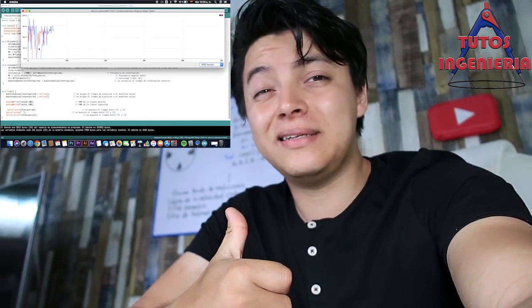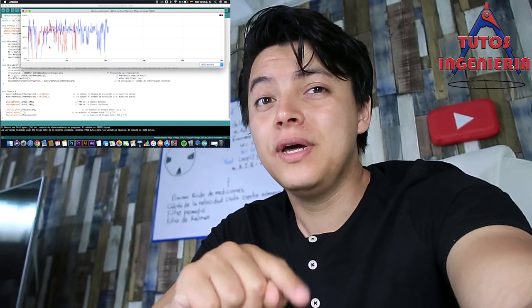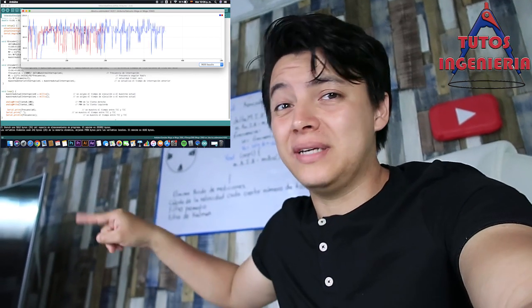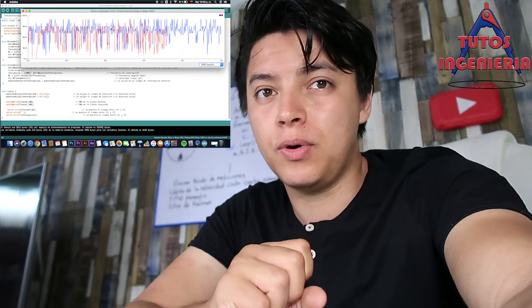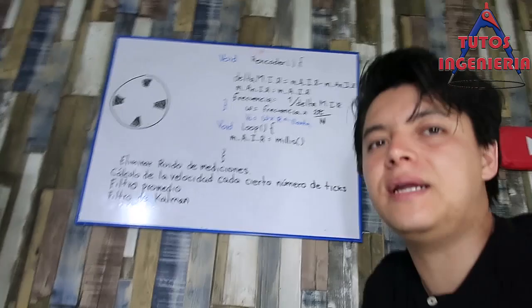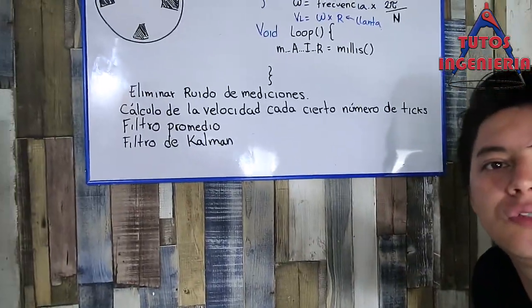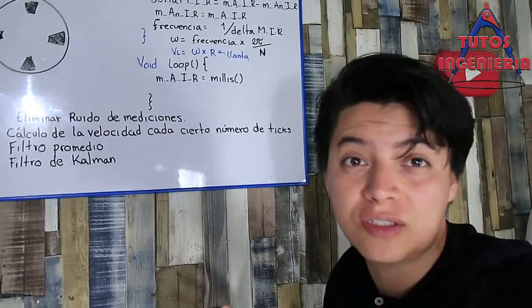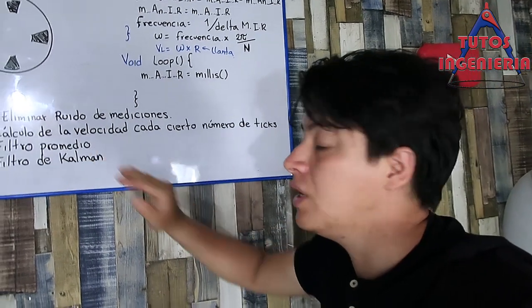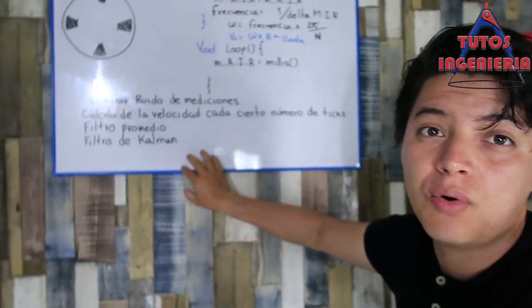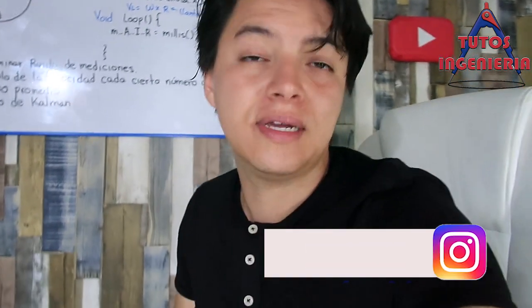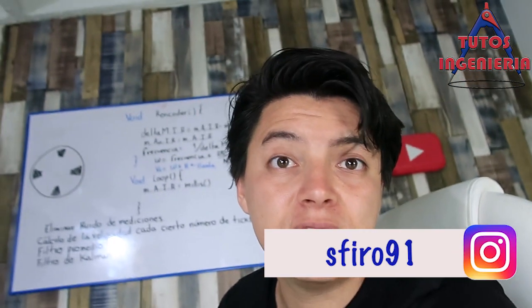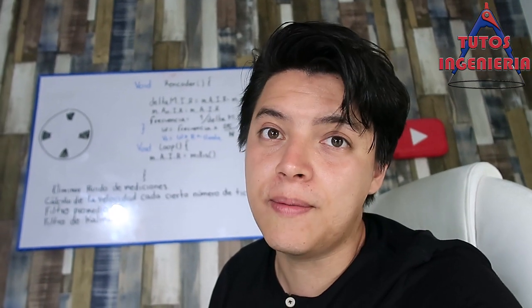In this video we are going to talk about signal filtering. In the last video we saw that measurement signals have a lot of noise and the controller doesn't accept that kind of signals. We are going to talk about a filter based on ticks and another one is a promedial filter. The common filter is not covered in this video but maybe in a next video we could learn about it.